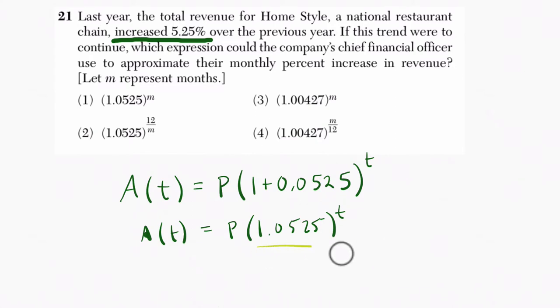First of all, they only want us to focus on the amount increasing by, so that's this portion of our equation. We're not concerned with the principal balance, so we're ignoring that. The second thing is we're writing this in months, and I have a feeling they're going to do some play with the exponents here.